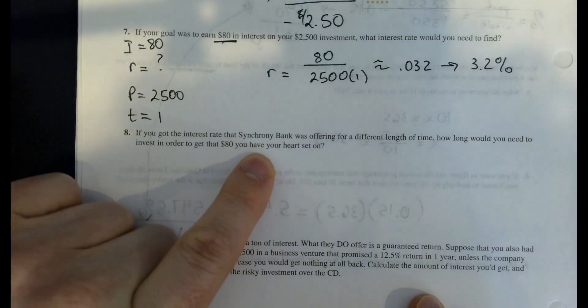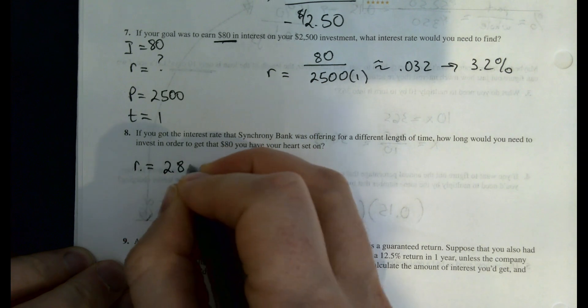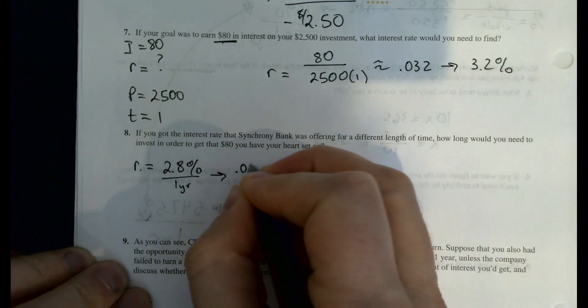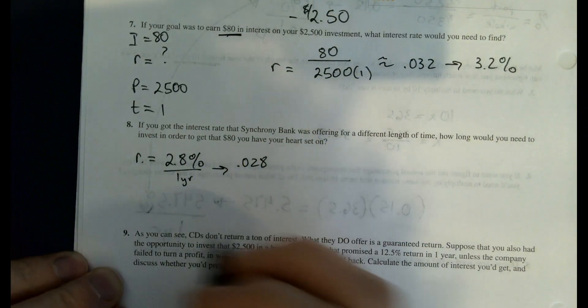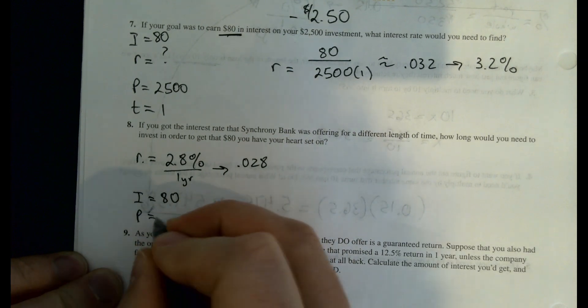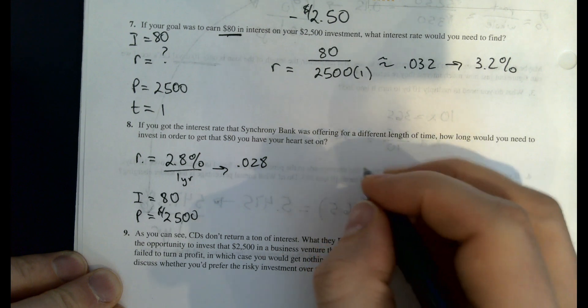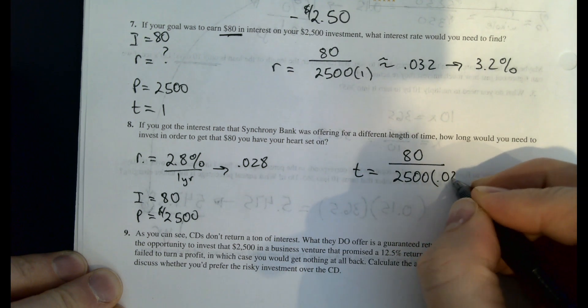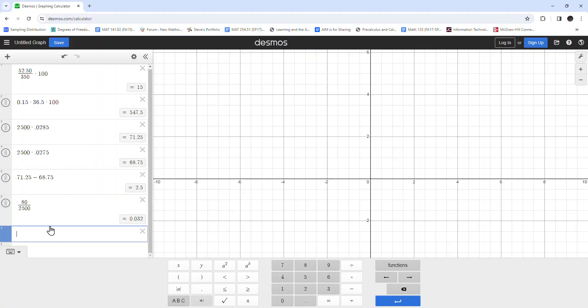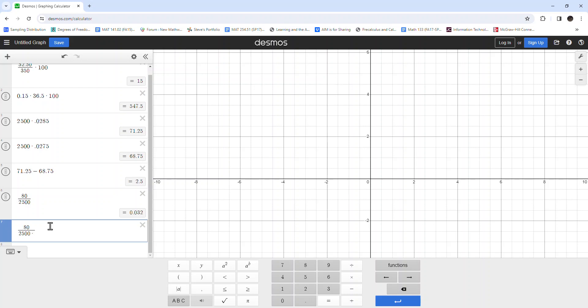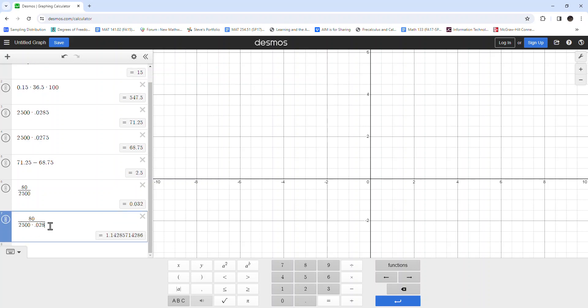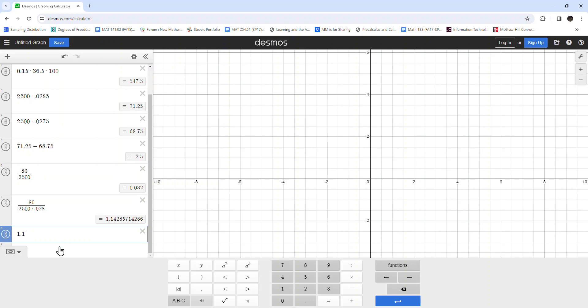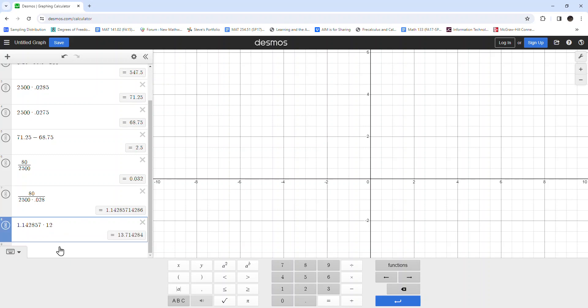So then we're told, what if you take the interest rate that Synchrony Bank is offering? Note that that interest rate is 2.8% per one year. So 0.028 as a decimal. How long would we need to invest it in order to get $80? So we're wanting this to come out to $80. We're putting in the same amount, $2,500. What's our time going to be? So T is equal to 80 divided by the principal times the rate. 80 divided by $2,500 times 0.028. Looks like we'd need 1.14 years. And I suppose what we should do is multiply by 12. We need approximately 14 months.